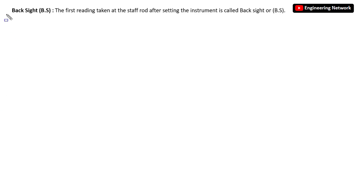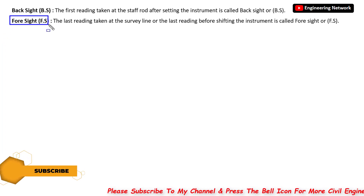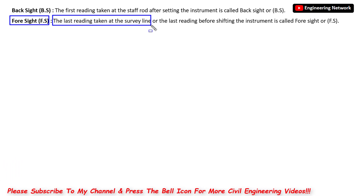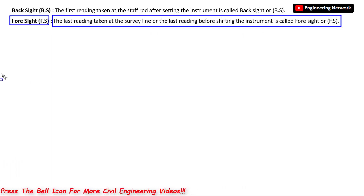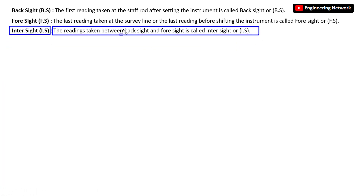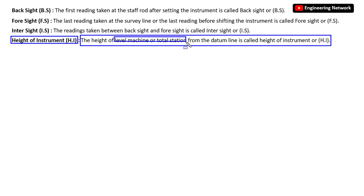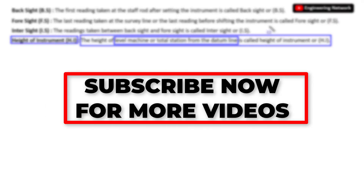First let me define all these terms and then I will explain with the help of an example. What is back sight — sometimes called BS? The first reading that is taken at the staff rod after setting the instrument is called back sight. Next is foresight or FS — the last reading taken before shifting the instrument is called foresight. Next is the height of instrument or HI, which means the height of the level machine or total station from the datum line.